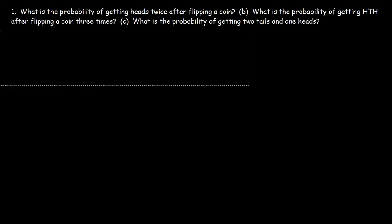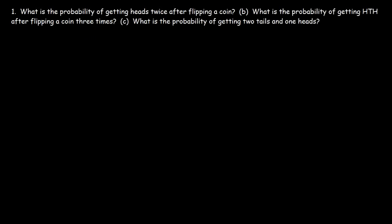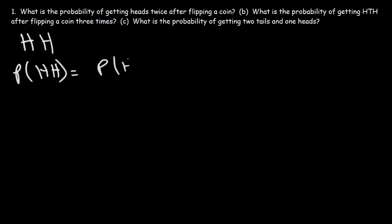Now let's focus on this question: what is the probability of getting heads twice after flipping a coin? We need to get heads on the first try and then heads on the second try. So the probability of getting these two events is going to be the probability of getting heads on the first try times the probability of getting heads on the second try.